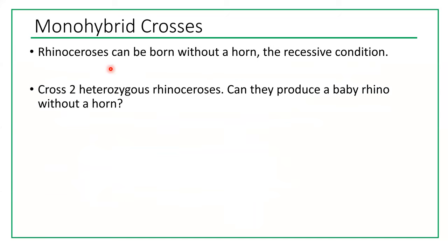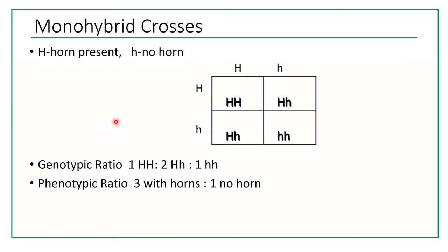Practice problem: Rhinoceroses can be born without a horn — the hornless condition is recessive. Cross two heterozygous rhinoceroses. Using H for horn present (dominant) and lowercase h for no horn (recessive), crossing two heterozygous individuals (Hh × Hh) gives a genotypic ratio of 1 HH : 2 Hh : 1 hh and a phenotypic ratio of 3 horn present : 1 no horn. So yes, they can produce a baby rhino without a horn.